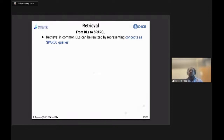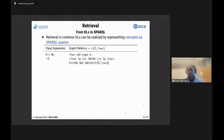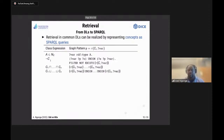It turns out that retrieval in common description logics can be realized simply by representing concepts as SPARQL queries — under certain conditions. We assume the graph is fully materialized and we use the closed-world assumption. Under these assumptions, every named class can be mapped to a graph pattern of the form '?x rdf:type A' — this class expression returns exactly the same result as running the retrieval function on A. For negation, we simply filter all things that are of type C and return everything that is not.